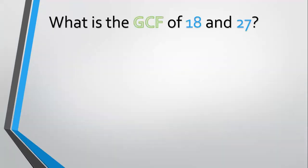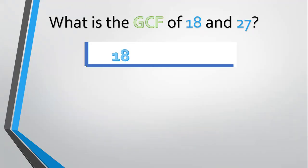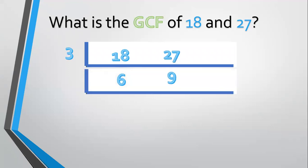For example, what is the GCF of 18 and 27? Align 18 and 27. The prime common factor is 3, so divide. 18 divided by 3 equals 6. 27 divided by 3 equals 9. Divide again by 3. 6 divided by 3 equals 2. 9 divided by 3 equals 3. So the GCF is equal to 3 times 3 equals 9.